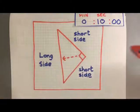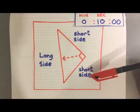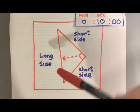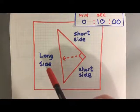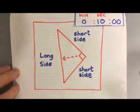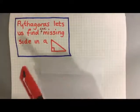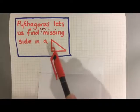And I call the long side the long side. As well as a long side, we've got a short side and another short side. I don't care which is shortest, they're just both shorter than the long side. Long side, short side, short side, that's what you need to know. Ten seconds in, guys, we're doing well. Okay, Pythagoras lets us find the missing side in a right-angled triangle.